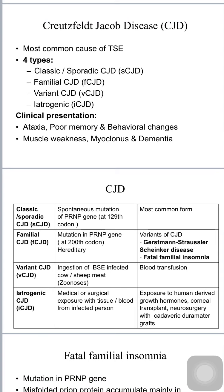Classical or sporadic CJD is the most common form, due to spontaneous mutation of the prion protein gene at codon 129. Familial CJD is due to germline mutation in the PRNP gene, so it runs in families hereditarily. Two variants are included in familial CJD: Gerstmann-Sträussler-Scheinker disease and fatal familial insomnia.